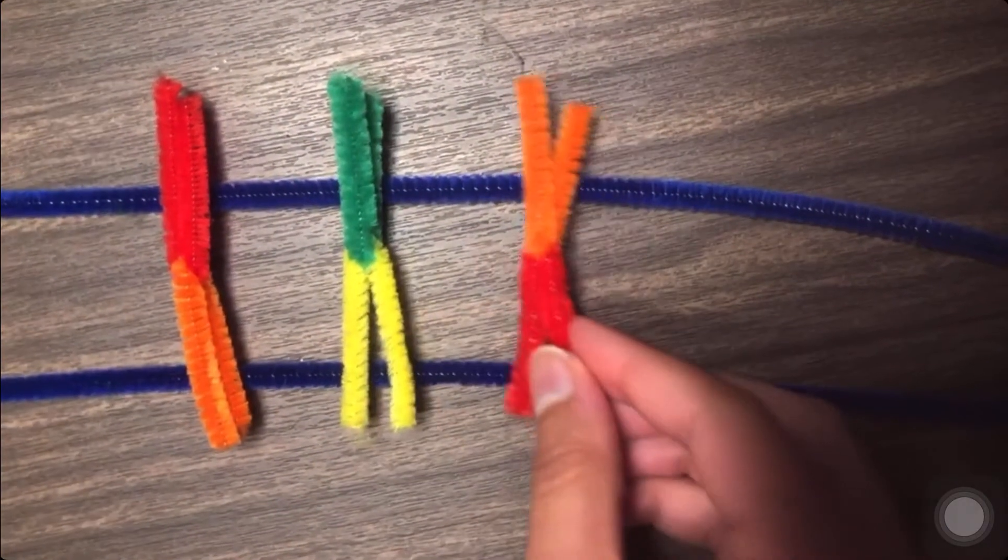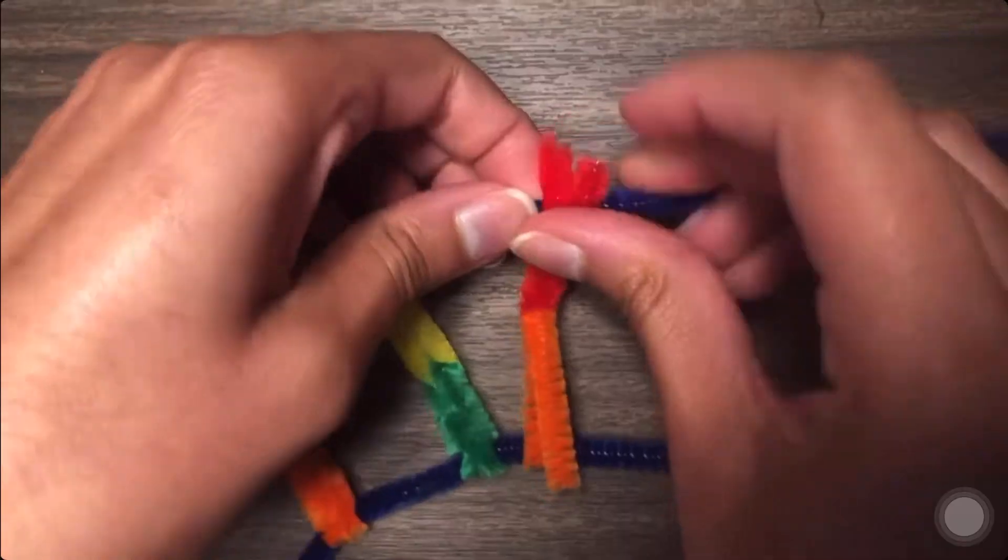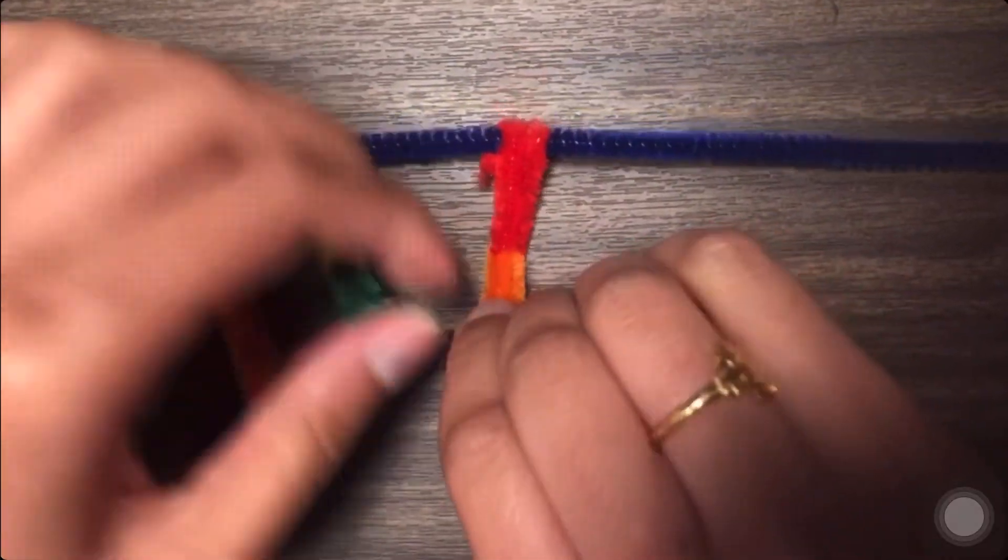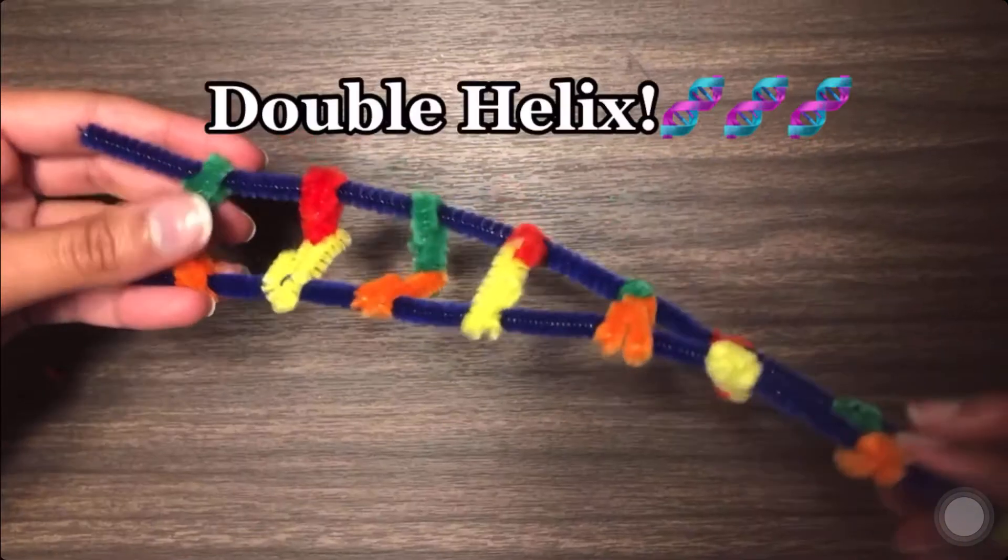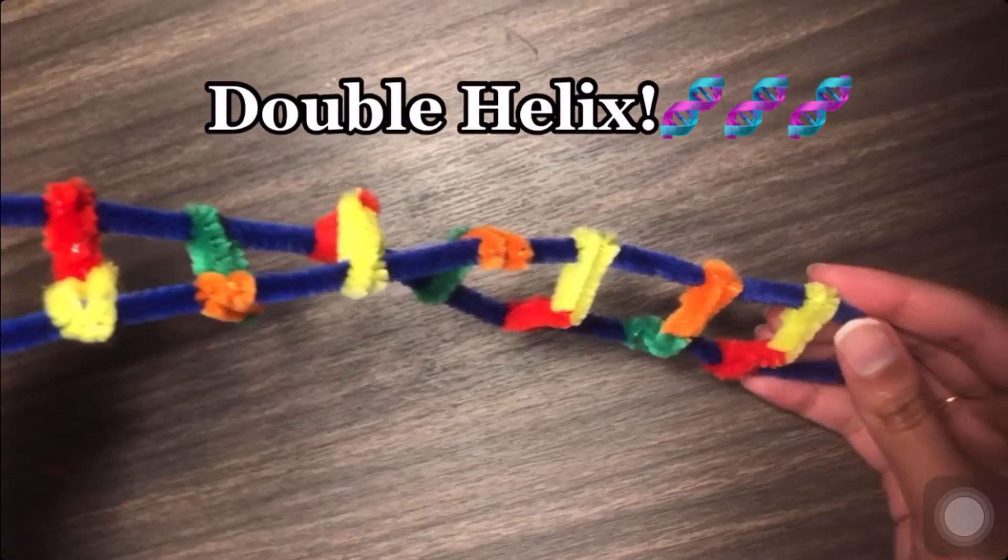Next take your base pairs and place them in a ladder-like fashion on your backbone. Connect them to the backbone to create your full DNA strand. Finally twist your DNA strand to achieve a double helix shape.